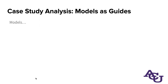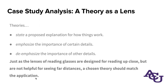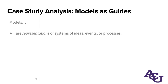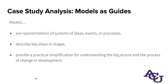Models have a similar function, but while theories are proposing an explanation for how things work, models are breaking it up into steps. We can see what leads to what, what is influenced by what — they're representations of systems that could be ideas, events, or processes. They describe the key steps or stages that these things unfold in. In essence, they provide a practical simplification so we can understand what the big picture is and what's happening when a milestone worth noting in change or development has taken place.